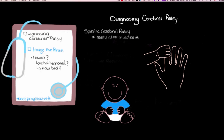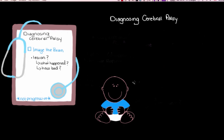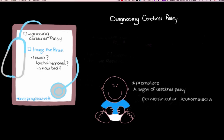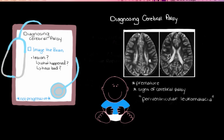Since our child was born prematurely and is showing signs of cerebral palsy, one concern is that he has periventricular leukomalacia — damage to the white matter around the ventricles — which is a known cause of cerebral palsy. There are other causes too, but let's use periventricular leukomalacia as our example. Here's an MRI showing a brain with periventricular leukomalacia.